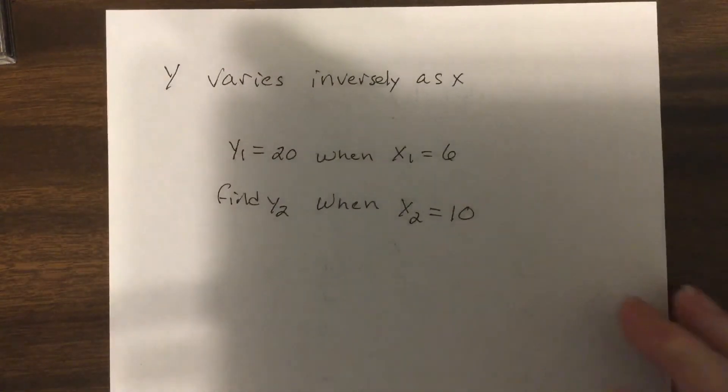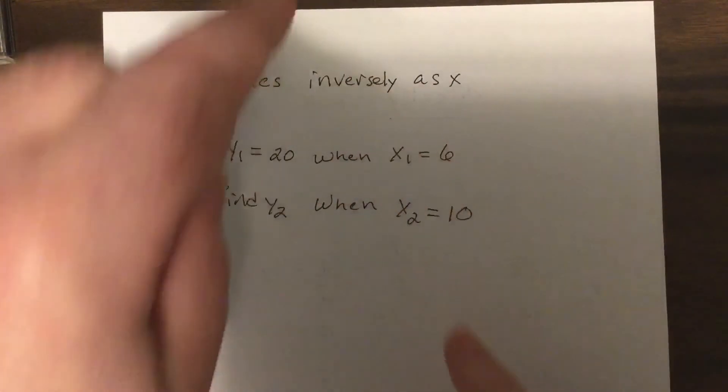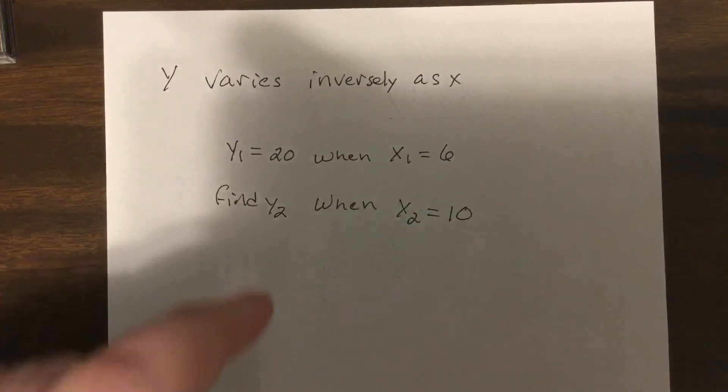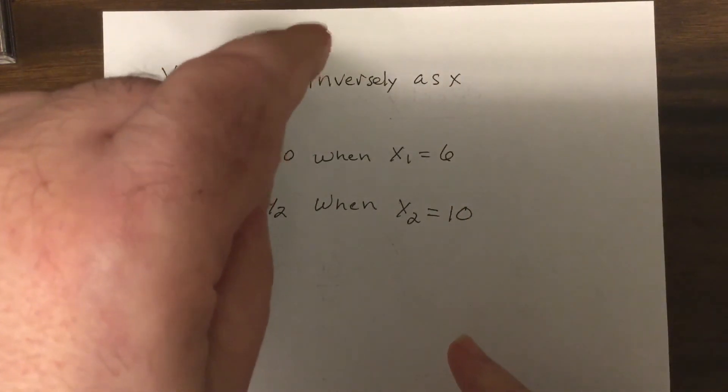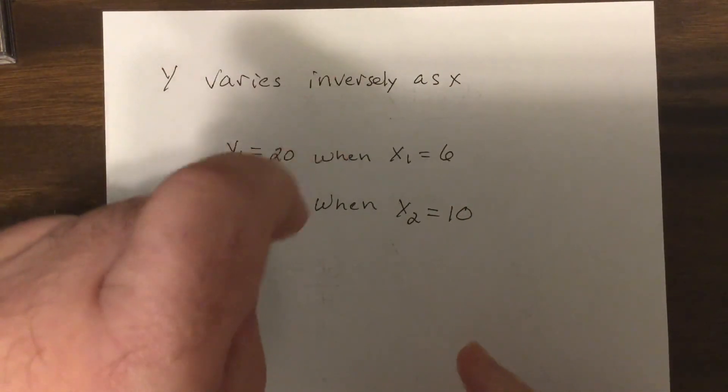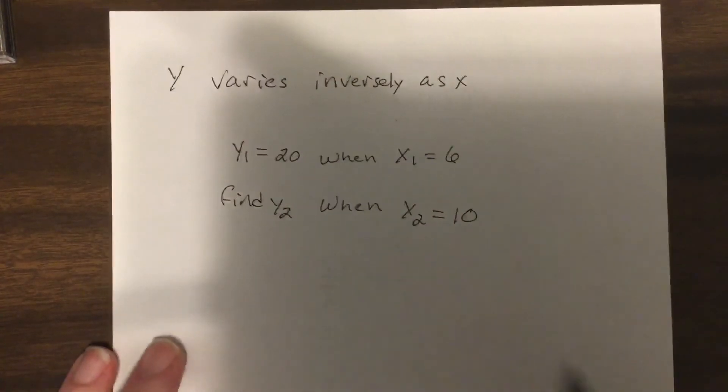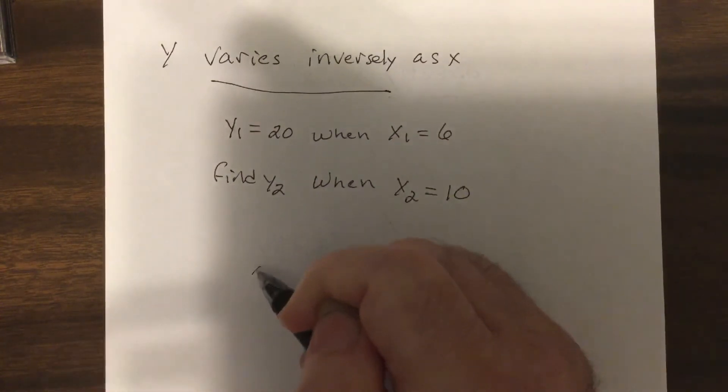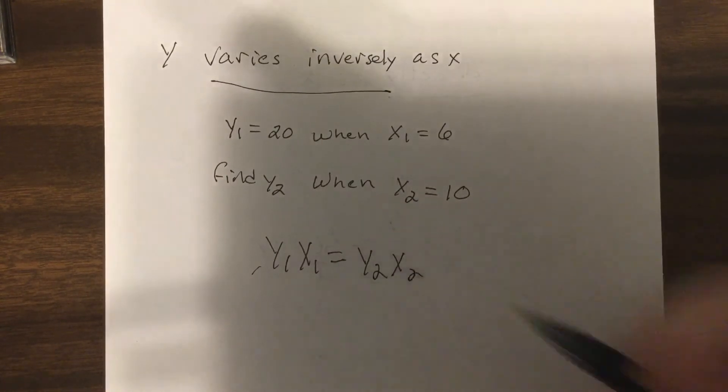Inverse is as one gets bigger the other one gets smaller. We talked about how nature occurs this way - as the wolf population goes up, the deer population goes down because that's what they eat. Then if they hit a point they start coming down, the deer starts coming back. That's a product. So whenever you see varies inversely, we know it's y₁x₁ equals y₂x₂.